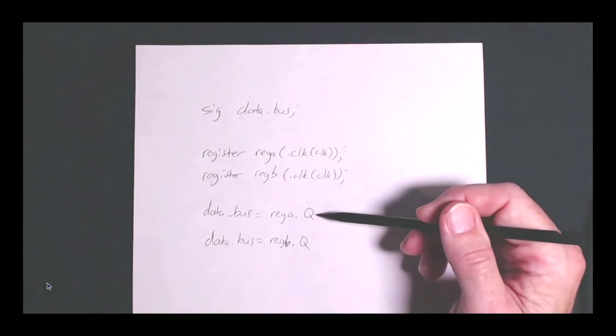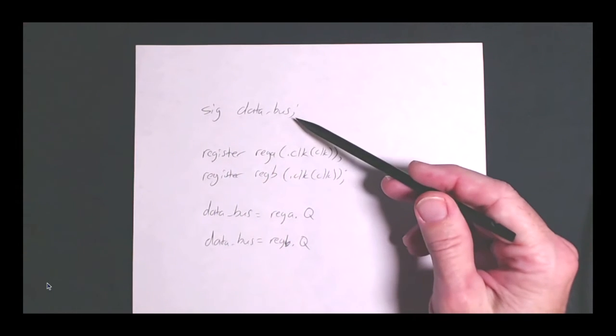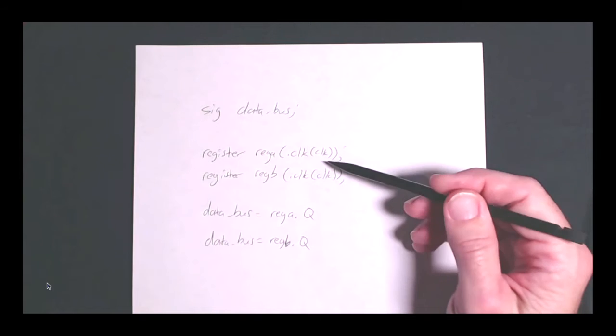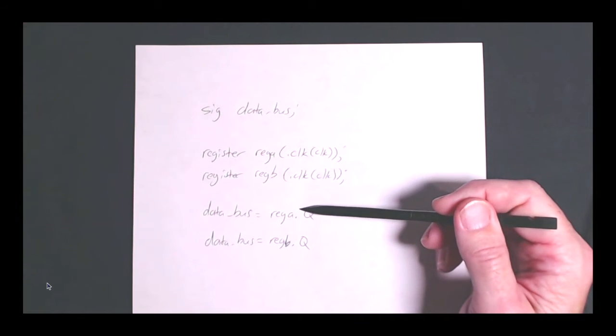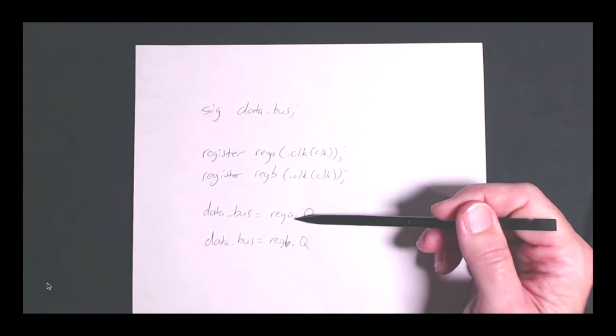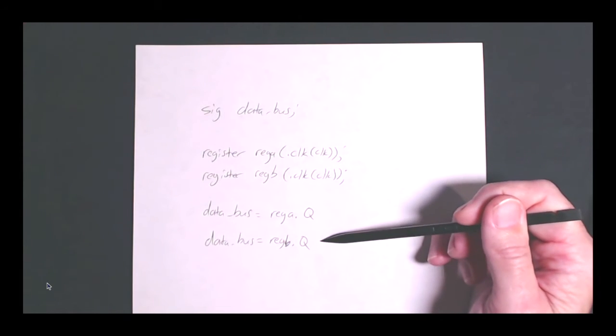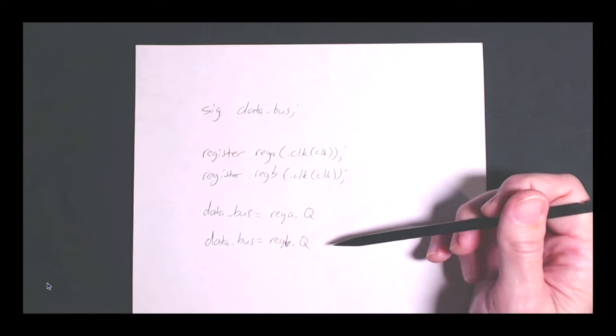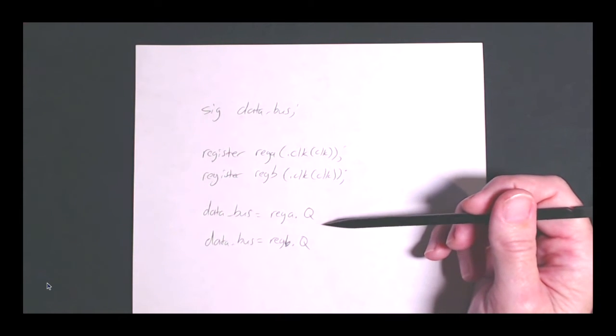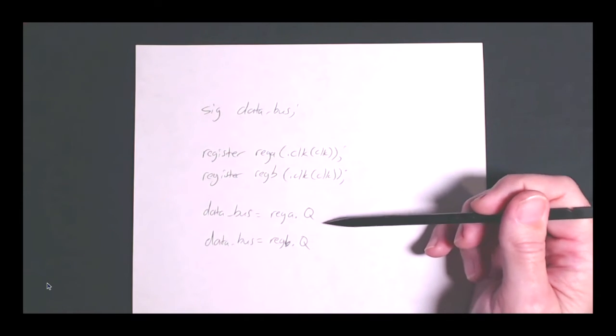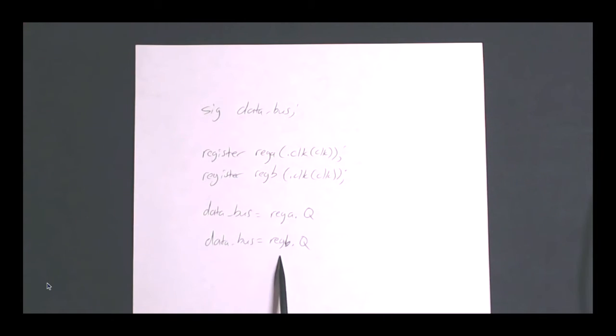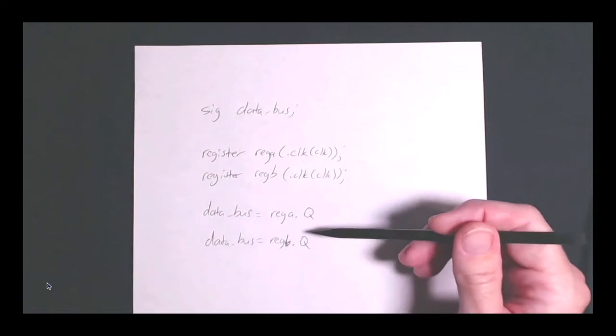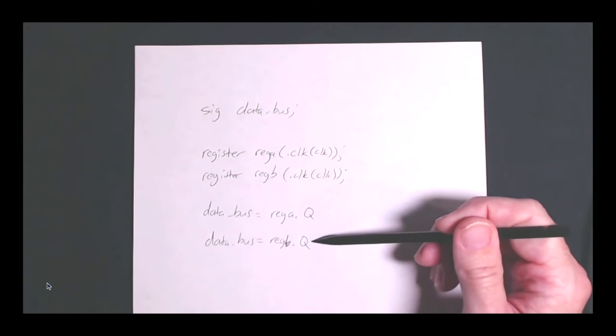So let's just think about this for a minute. So I created a signal called data bus, instantiated both of my registers, and then set the data bus equal to the output Q from each one of the registers. Well, if you think about what this means in Lucid, what this means is that the value of data bus or the state of data bus is always going to be regb.q.